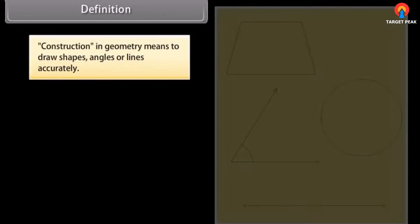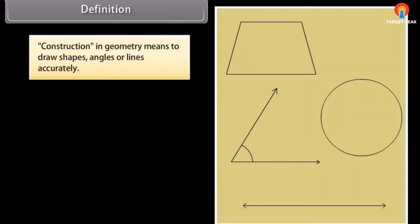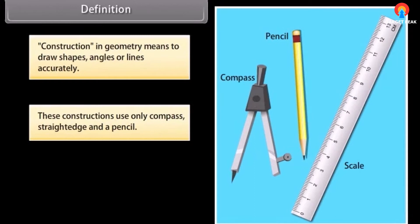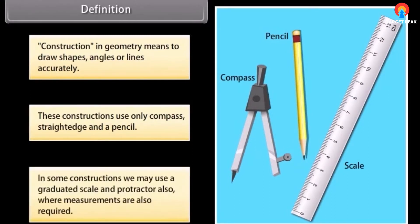Definition: Construction in geometry means to draw shapes, angles or lines accurately. These constructions use only compass, straight edge (that is ruler) and a pencil. In some constructions we may also use a graduated scale and protractor where measurements are also required.